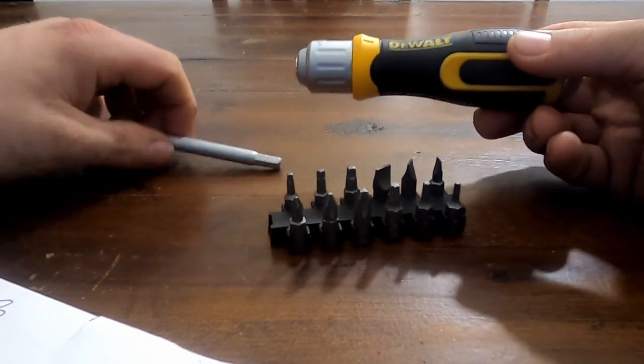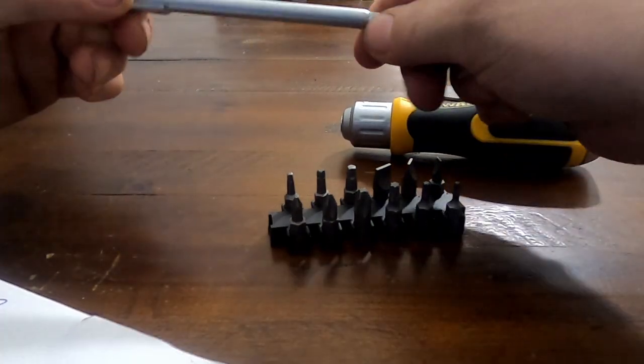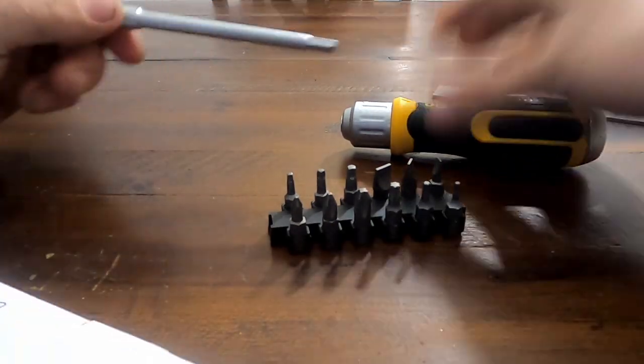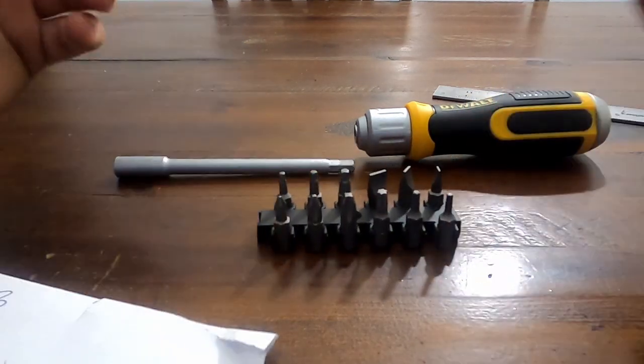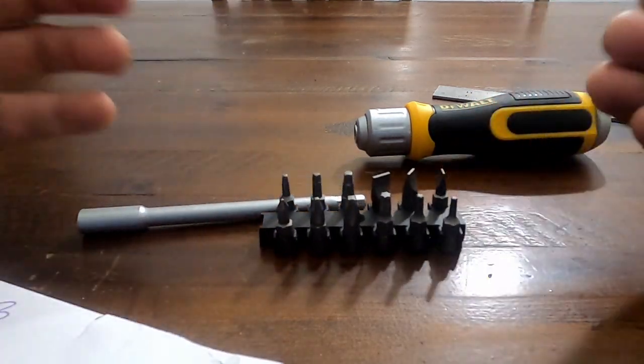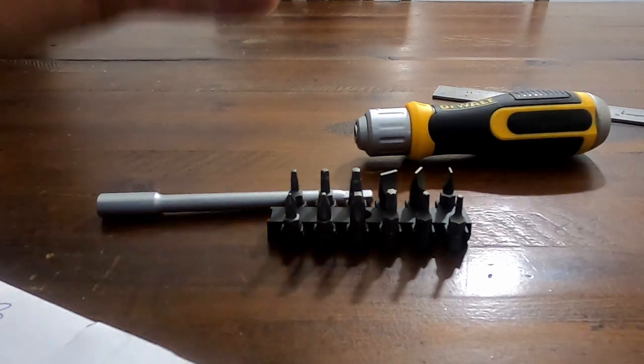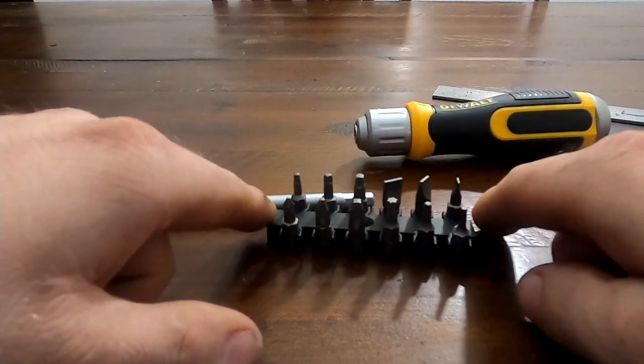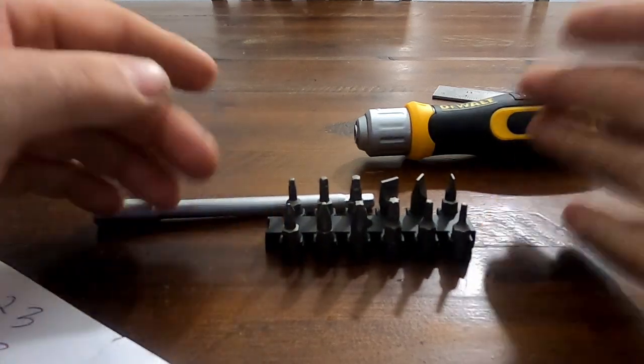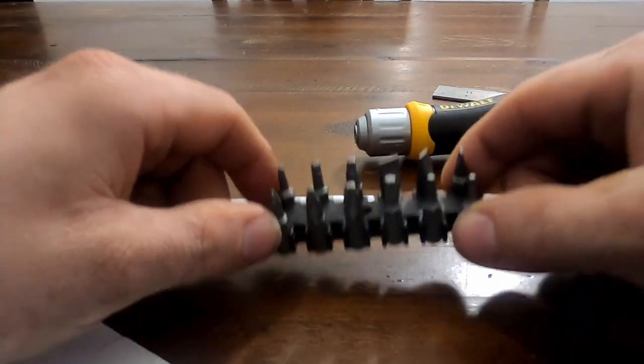And so with the screwdriver handle, the extension piece, the 12 bits, and the little holder that comes with it, what I have done is I actually took a knife and chopped this black plastic piece down to make a mini bit holder.